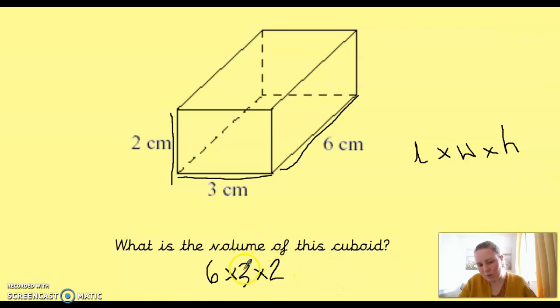Or we could do 2 times 3 is 6, and 6 times 6 is 36. Or we could do 6 times 2 is 12, times 3 is 36. So, either way, we're going to get 36.